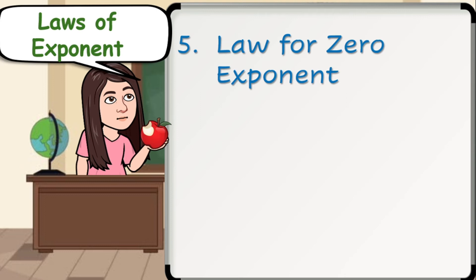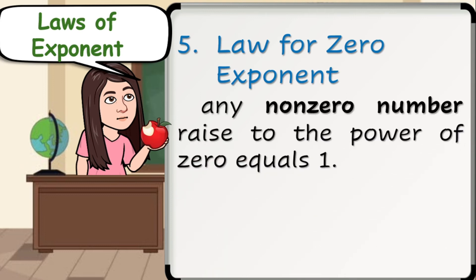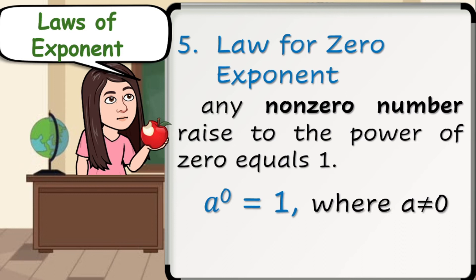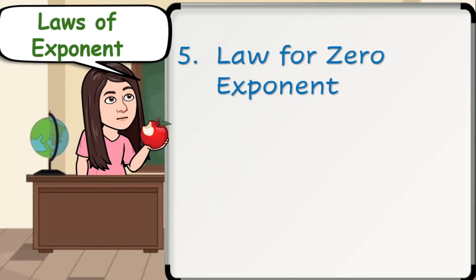Number 5: law for zero exponent. Any non-zero number raised to the power of 0 equals 1. Mathematically speaking, a raised to 0 is equal to 1, where a should not be equal to 0.